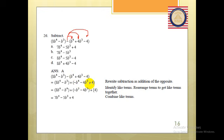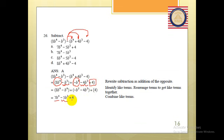Then I take the like terms — same symbol, same power. Here, 8b^4 and negative b^4: 8 minus 1 equals 7, so 7b^4. Next, negative b^3 and negative 4b^3 — both signs are the same, so 1 plus 4 is 5, giving negative 5b^3. The constant 4 has no like term, so it stays. My answer is 7b^4 minus 5b^3 plus 4, which is answer B.